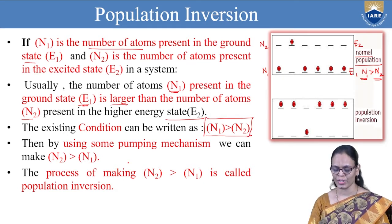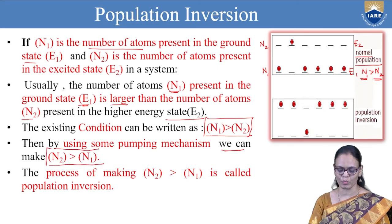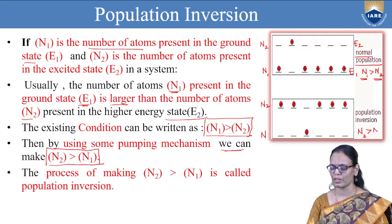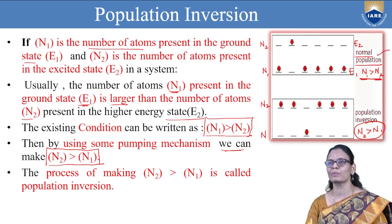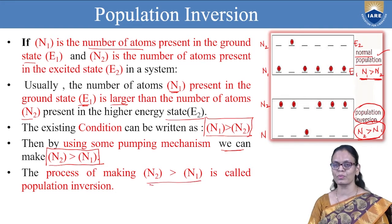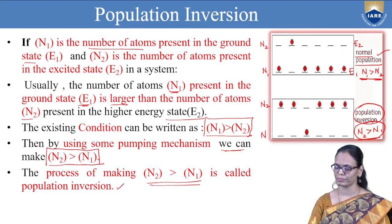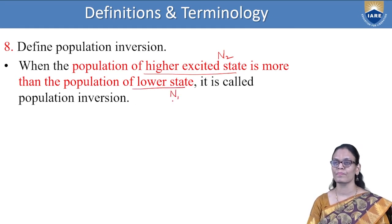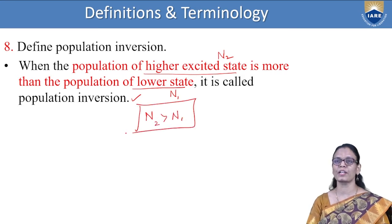By some pumping mechanism, if we can make N₂ greater than N₁ — that is, the number of atoms in the excited state more than in the ground state — this is an inversion of the normal condition. We are calling this population inversion. When the population of the higher excited state N₂ is more than the population of the lower energy state N₁, it is called population inversion. Simply put: N₂ > N₁ is the population inversion condition.